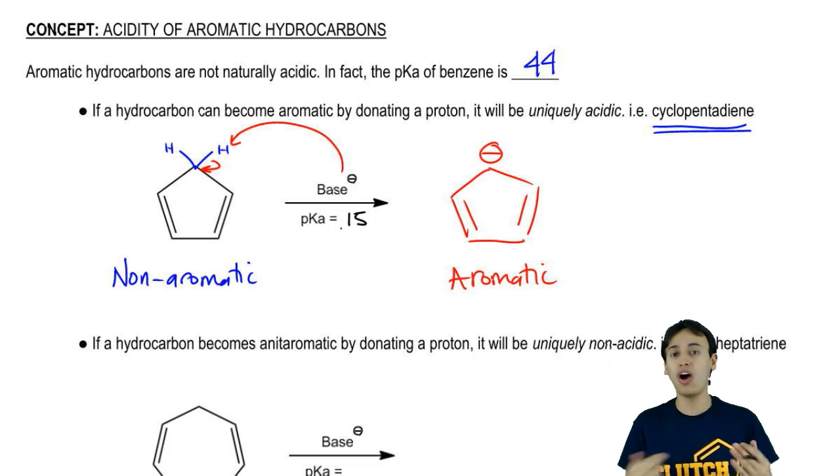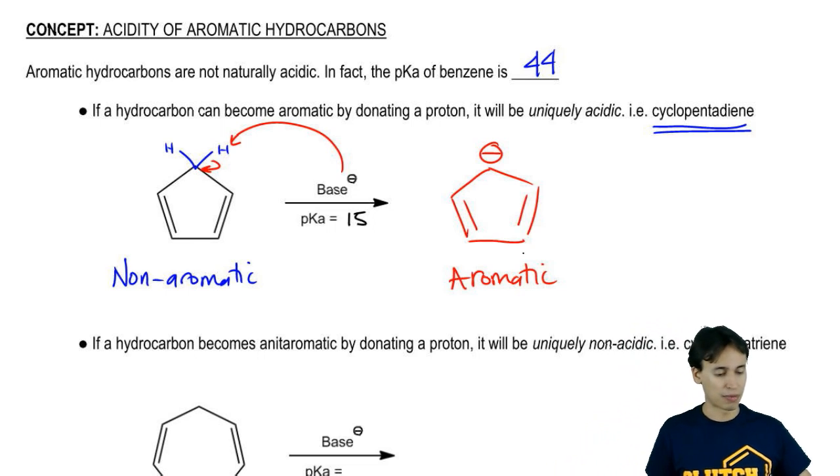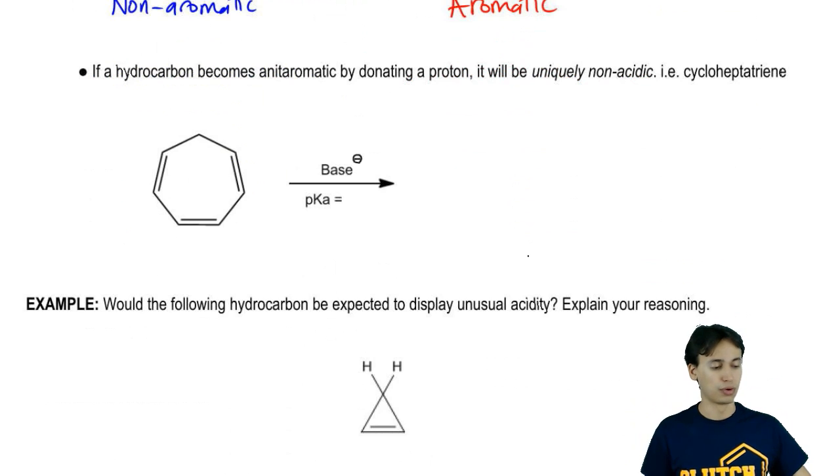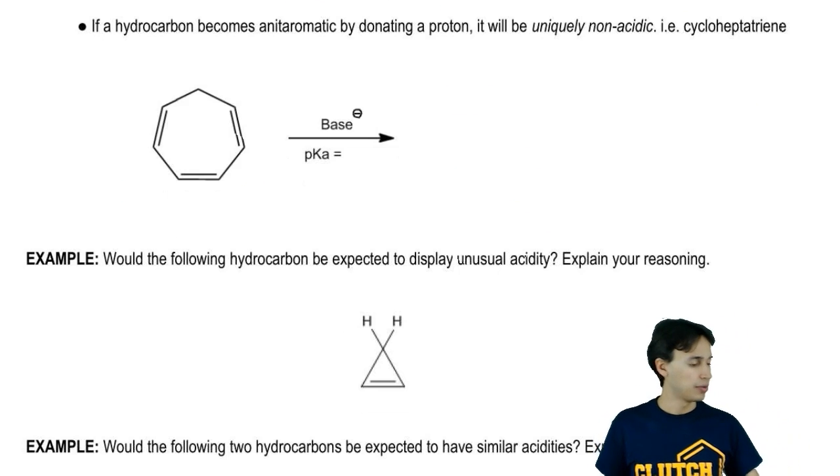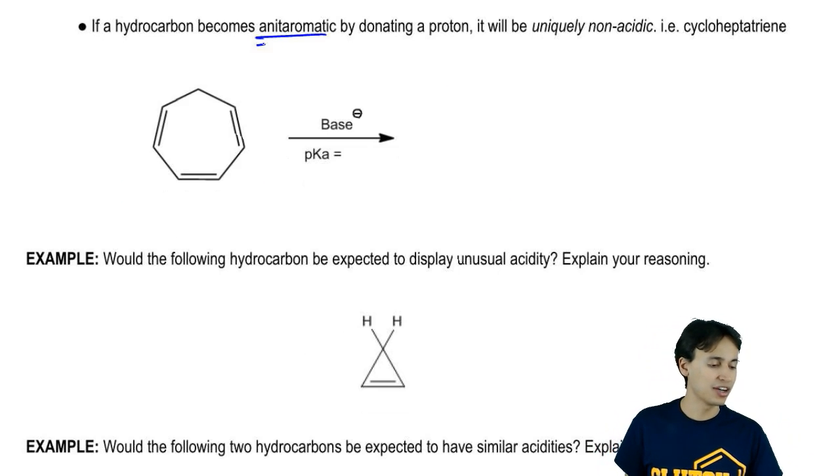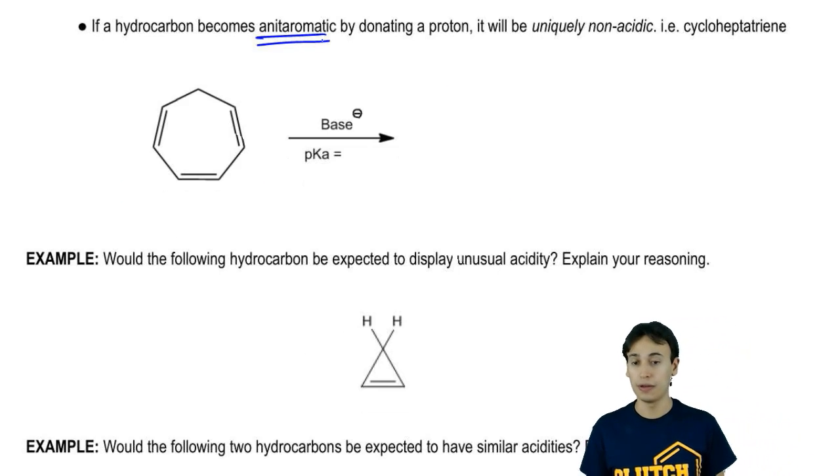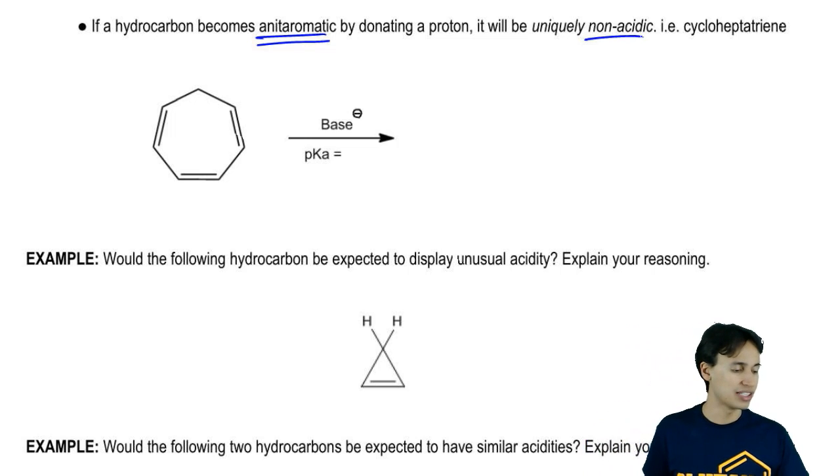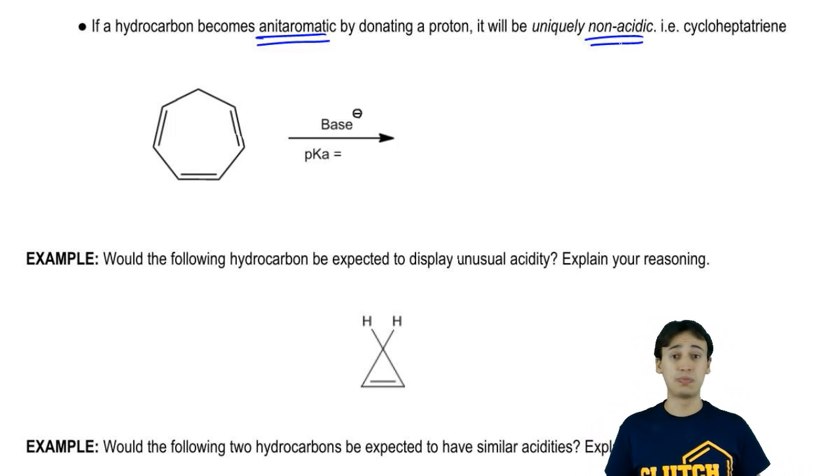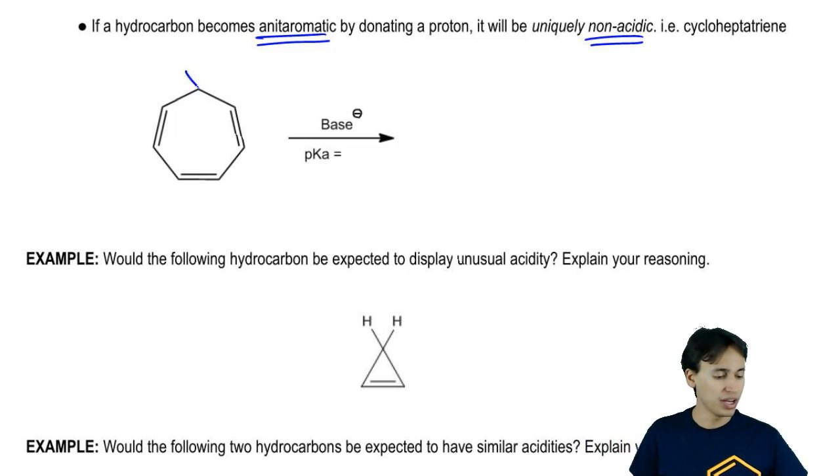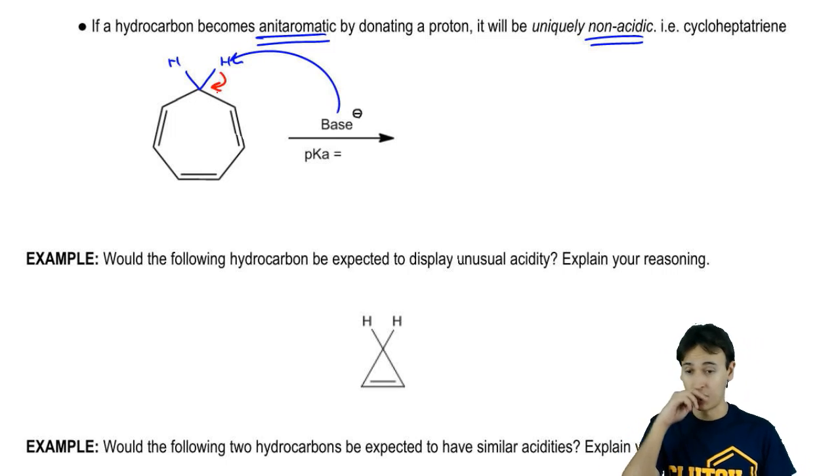Now, the opposite idea can apply for molecules that become anti-aromatic when donating protons. Let's look at this molecule. If a hydrocarbon becomes anti-aromatic after donating a proton, then it's uniquely non-acidic. Cyclopentadiene, same thing. We don't expect it to be very acidic, but what if a base were to come along and pull off this proton, what kind of charge would it now receive?